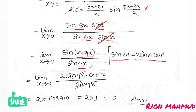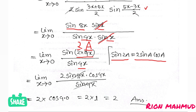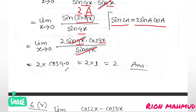So the expression becomes 2 sin8x sin x divided by 2 sin4x sin x. The 2 and sin x cancel. We are left with sin8x over sin4x. We can write sin8x as 2 sin4x cos4x. So the final simplified form gives 2 cos4x.